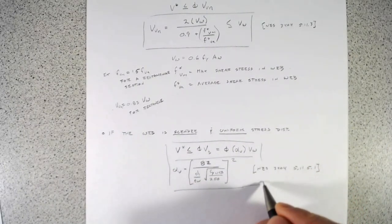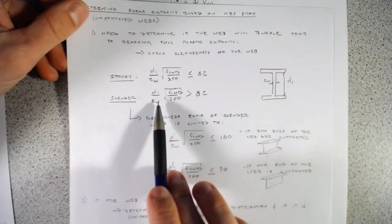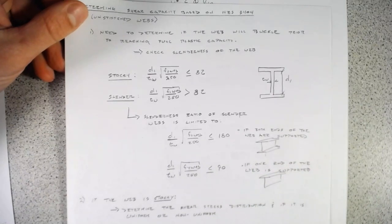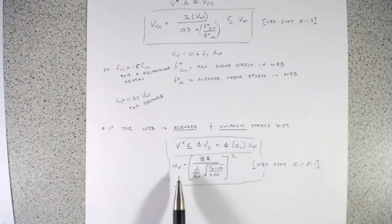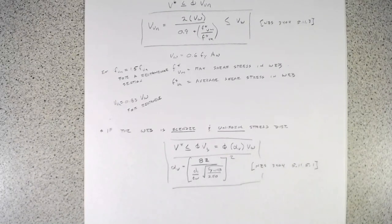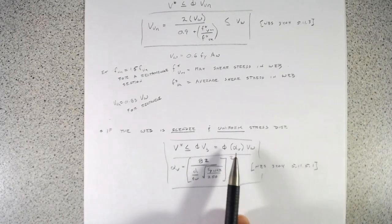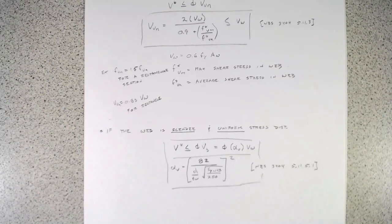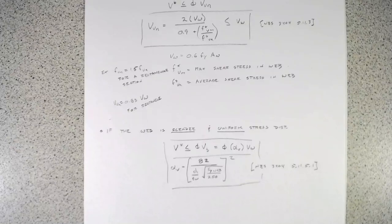The αv factor works intuitively: 82 is the slenderness boundary between stocky and slender. The more slender the web (larger denominator), the smaller αv becomes, meaning a lower buckling capacity. As the slenderness approaches 82 from above, αv approaches 1 and the capacity approaches that of a stocky web — full plasticity.